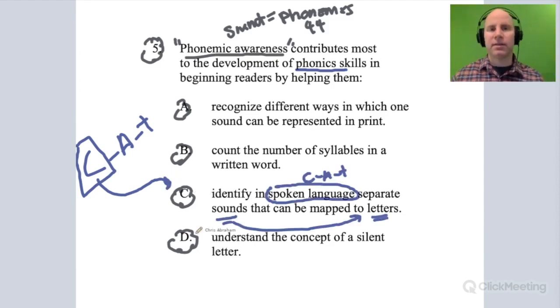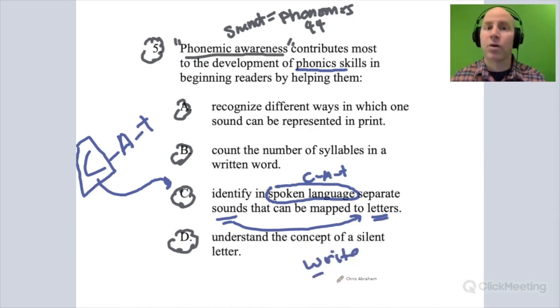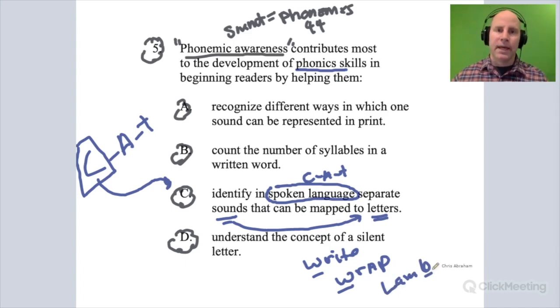Now let's look at some of these other answer choices and cross them out. Like D, this is understanding the concept of a silent letter, like in the word right or wrap or lamb. Here, the level of phonemic awareness the child has isn't going to really help them with a silent letter. This is more of a phonics rule—this is that rule the child has to be taught. The W in front of the R, we don't pronounce it, it's silent.